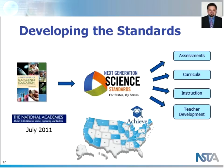The National Academies are engaged in pulling together the framework, which was released in July of 2011. Achieve is managing the process to develop the standards themselves. You can see 26 states that agreed to work together on the standards. Those states will consider the standards once completed and are providing guidance to the writers — though that doesn't mean they're definitely adopting them, and states not involved will also have the opportunity. Every state will have the option, and the standards will then lead into assessments, curriculum materials, instruction, and teacher professional development.